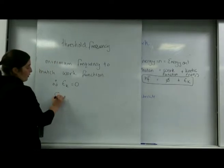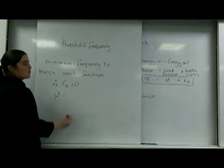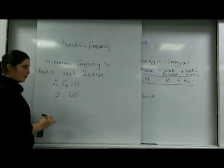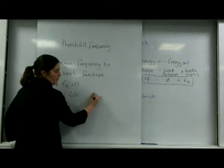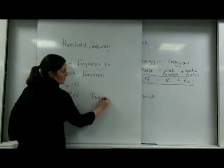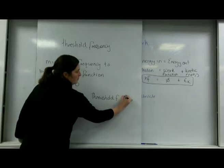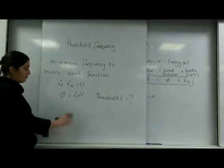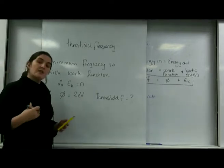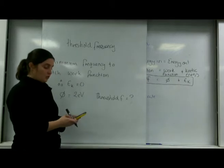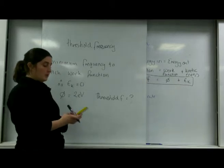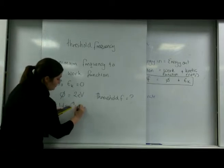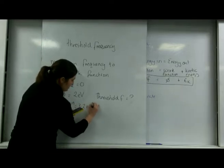So if my work function was, let's say, two electron volts, and I want to find my threshold frequency here, I could use the formulae. Two electron volts, first of all, I need to convert that into joules. So 2 times 1.6 times 10 to the minus 19 equals 3.2 times 10 to the minus 19.